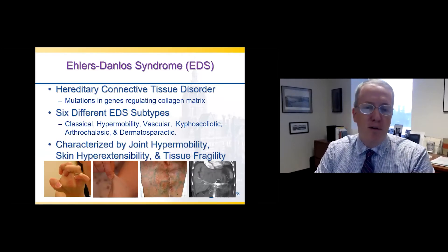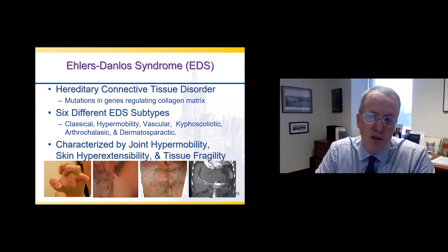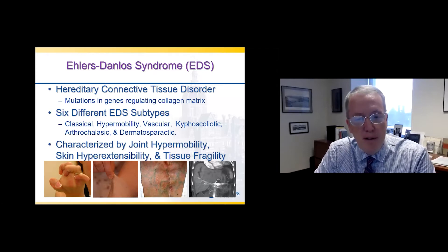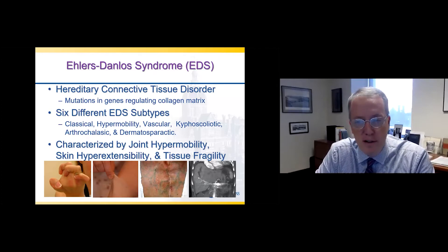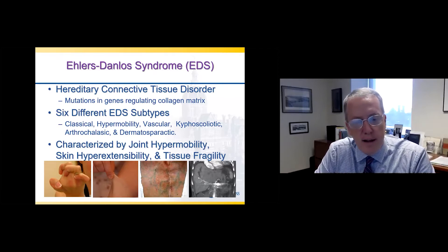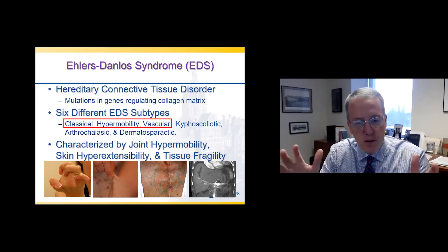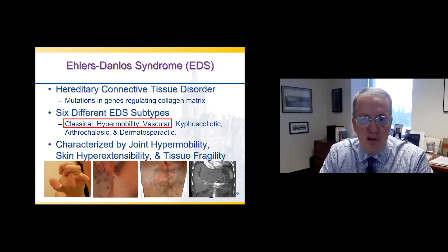Ehlers-Danlos syndrome is a hereditary connective tissue disorder, and these are mutations in the genes that regulate our collagen matrix. There are six different Ehlers-Danlos subtypes — these are the six most common: classical, hypermobile, vascular, kyphoscoliotic, antaclassic, and dermatosporotic. Importantly, the most common types that have vascular complications are classical, hypermobile, and vascular EDS. All these disorders are characterized by some degree of joint hypermobility, skin extensibility, and tissue fragility.